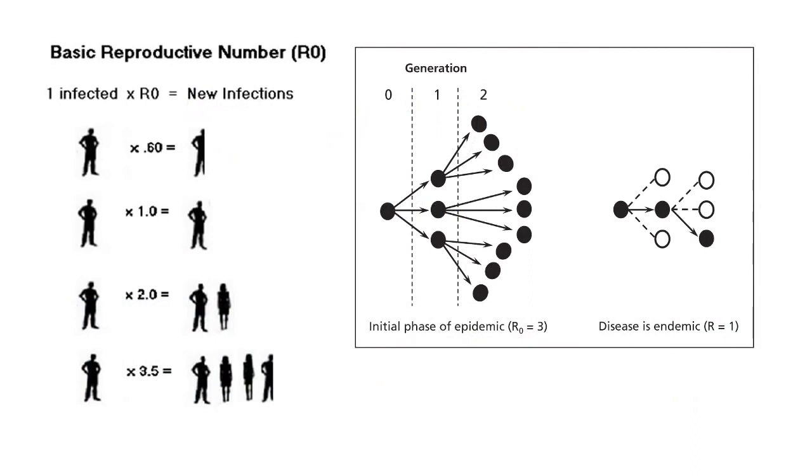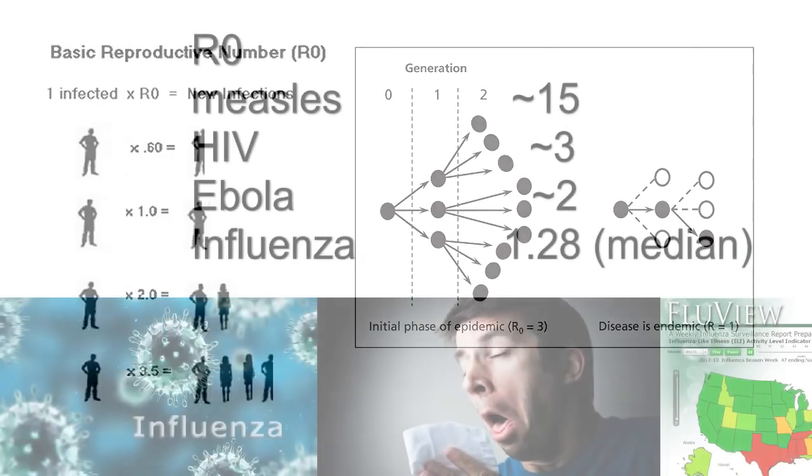Basic reproduction rate is abbreviated as R sub-zero. If each infected person infects more than one person, we have a spreading epidemic that grows over time. If each infected produces fewer than one additional infection, the disease dies out over time.